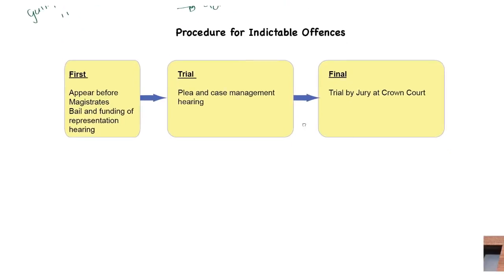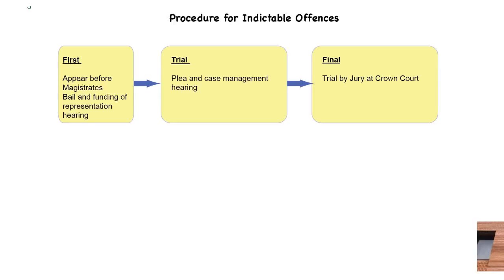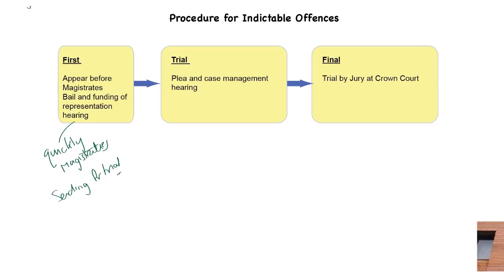Indictable offences are far more complex. They always appear before a Magistrates Court where you will hear bail and funding of representation hearings. But this passes through the Magistrates very quickly — if you remember, we go back to the Criminal Procedure Rules, it has to be done expeditiously. It's straightforward: questions are asked only on issues of bail and who will fund the defendant. The defendant then gets a sending for trial order, because this is an indictable offence only, so it is going to go to Crown Court.